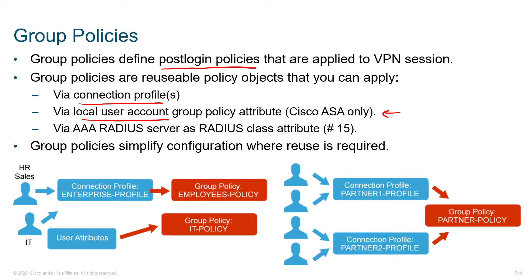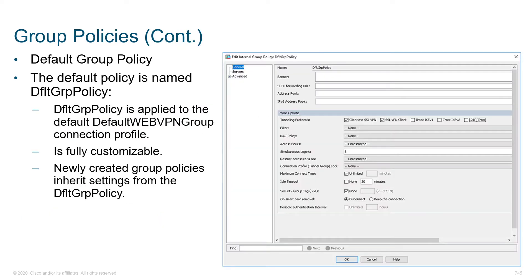For scalability, you'd associate it through your AAA RADIUS server. This is where we tie it in to RADIUS class attributes, specifically number 25. Group policies simplify the configuration where reuse is required because we can set things at a very broad level, and then make exceptions more specifically as needed.